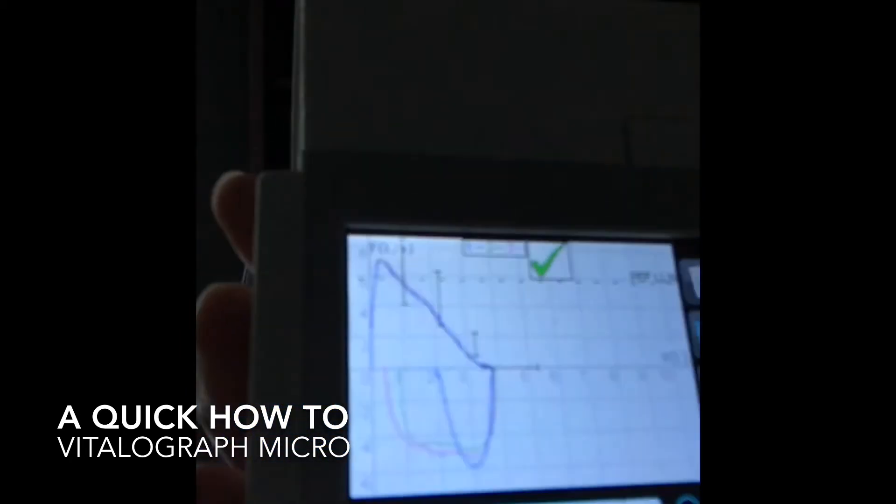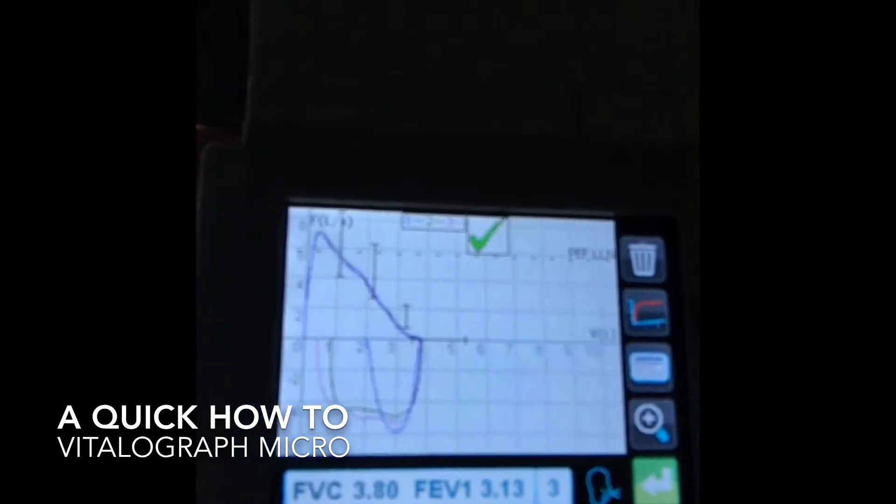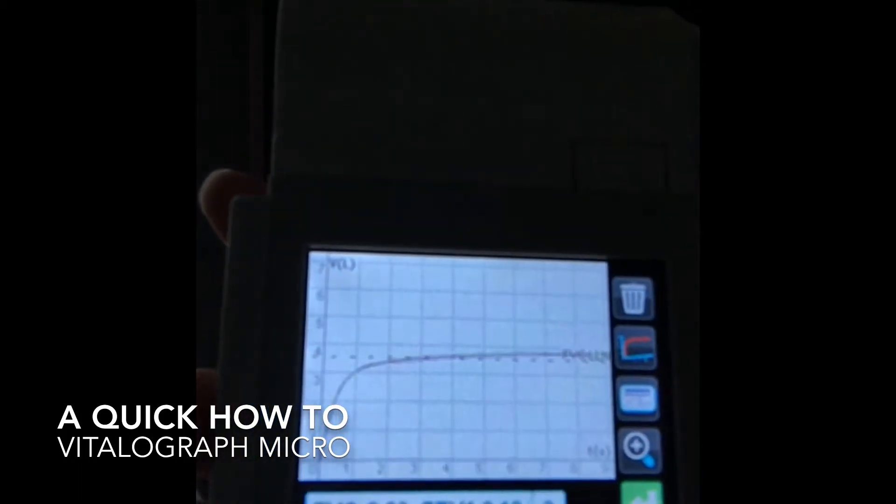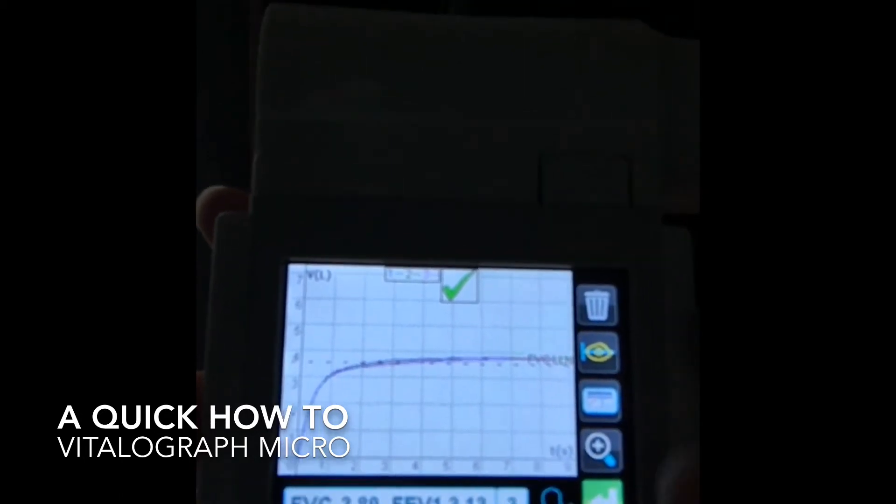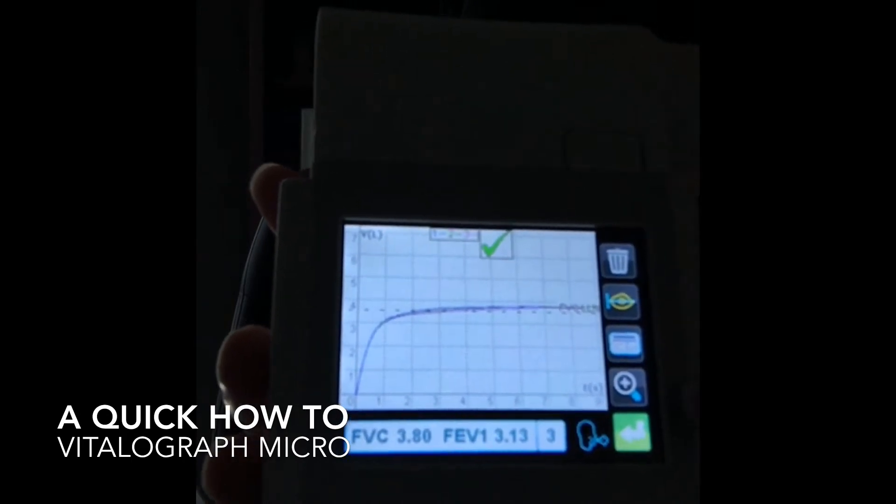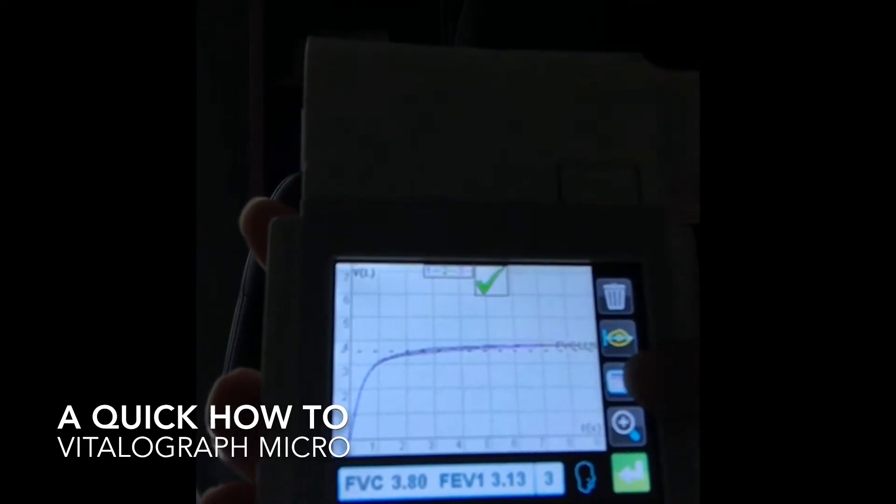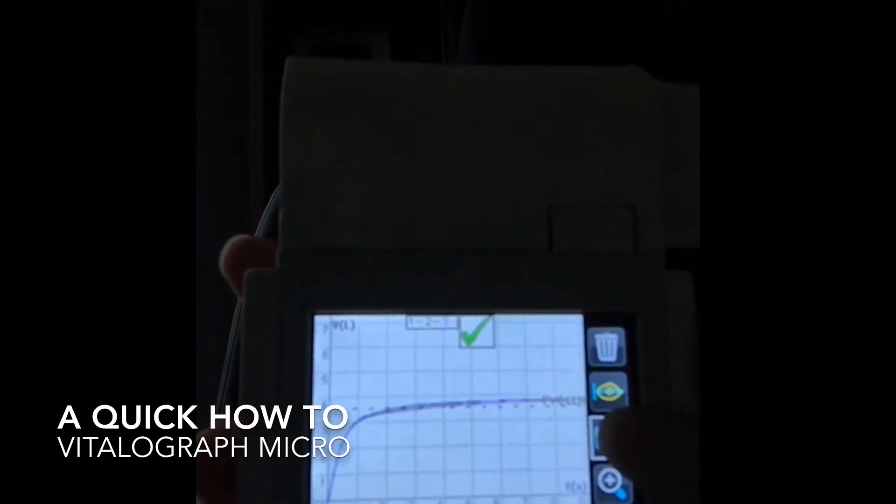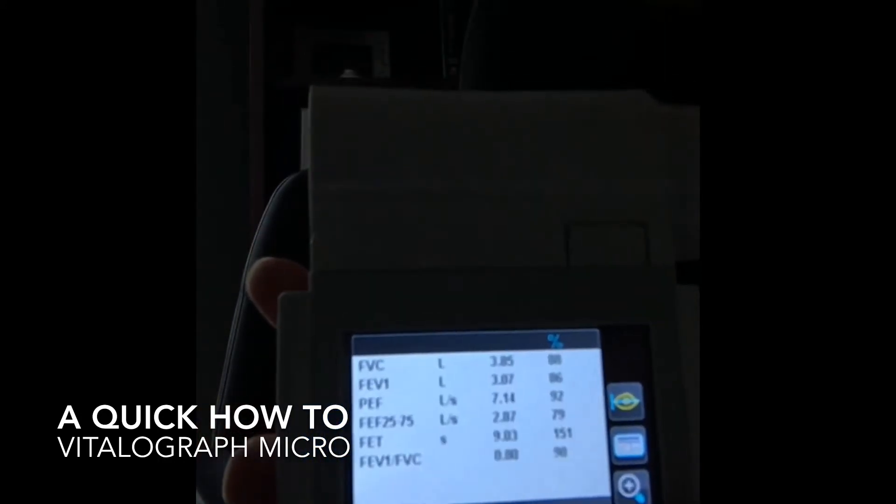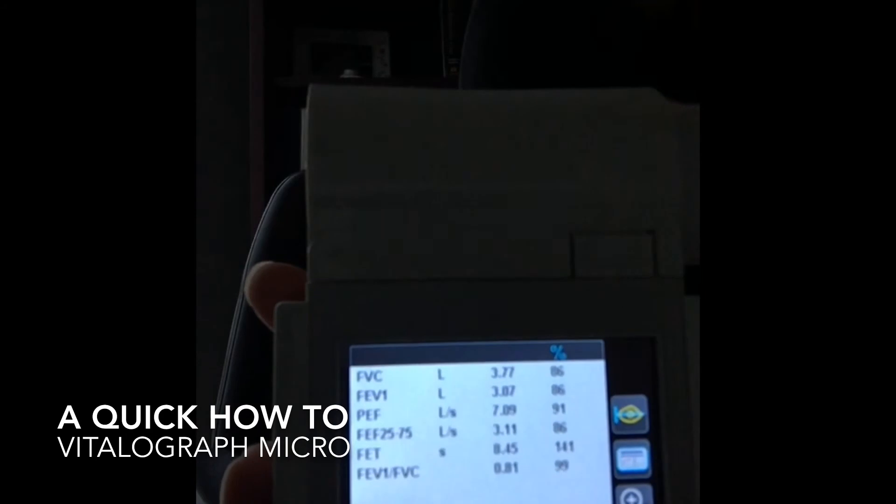Now, if you want to look at the specific components of each loop, I have effort number three selected here. So you can click here, look at your volume time. I'm going to make sure that you overlap, that you overlay nicely there. That indicates that we have some consistency. And then you select this button here. And that will allow you to toggle through the numeric values of each of your tests.